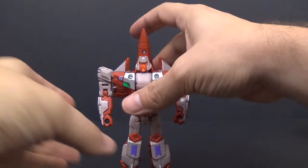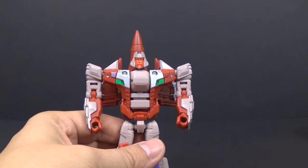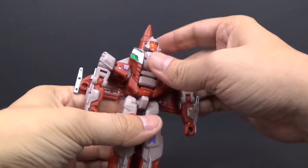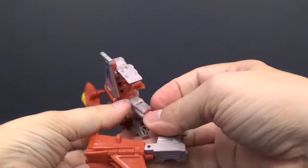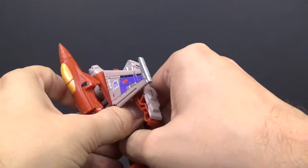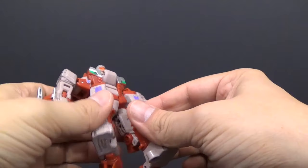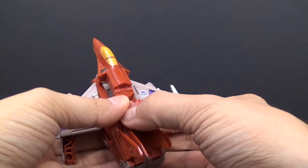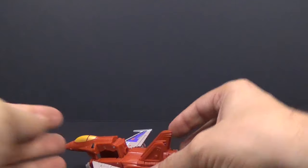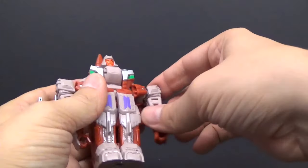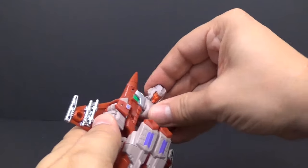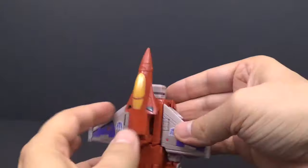Alright, for leg number two. We're going back to jet form, not all the way, but most of the way. Just like with Cutthroat, we're going to take this and bring it up to here. We'll take the arms down. Leave the head like that, flip this down, and Windsweeper is finished.